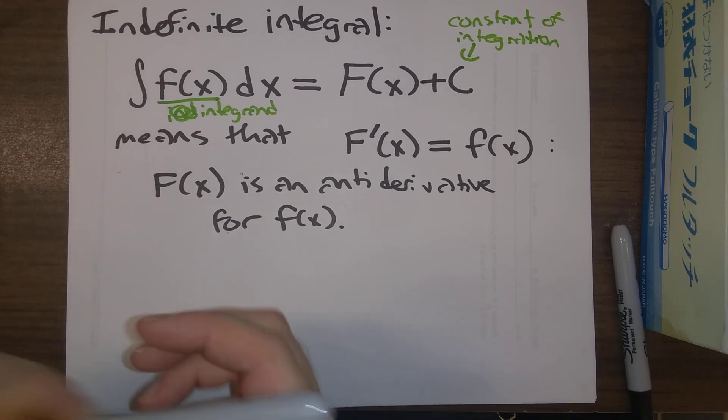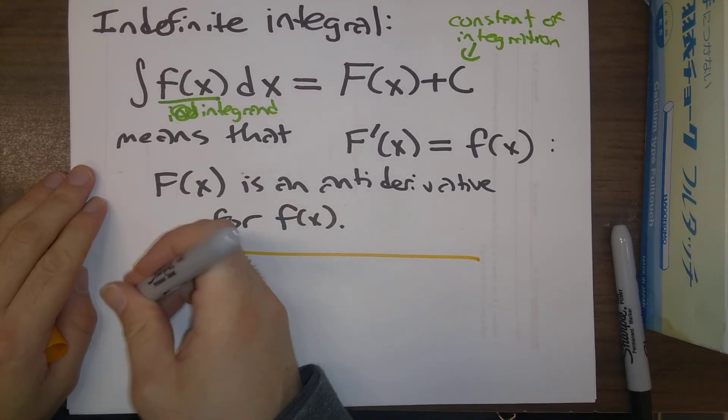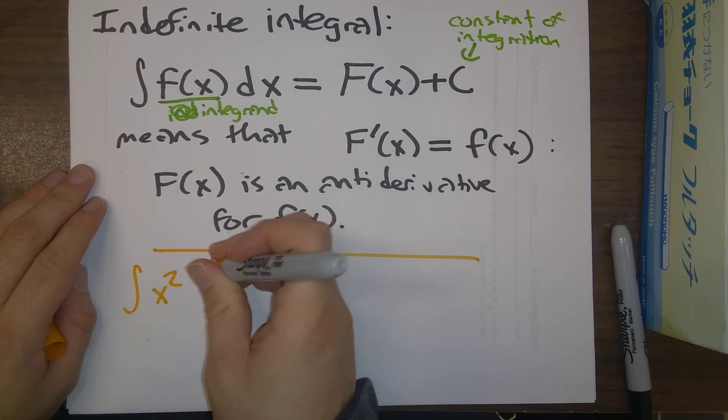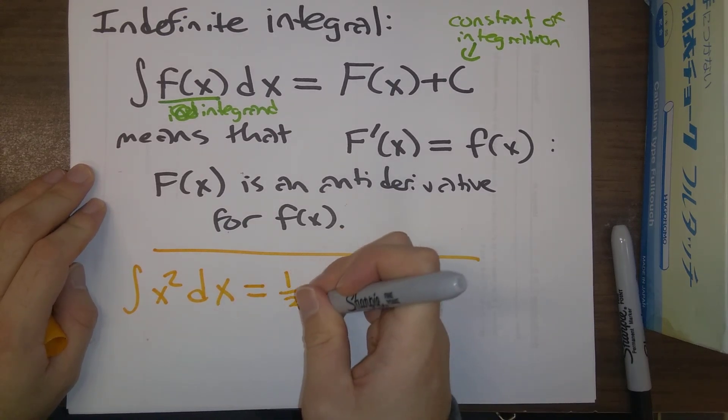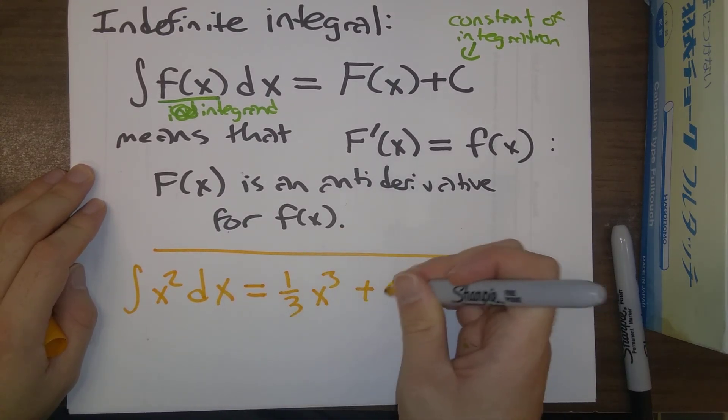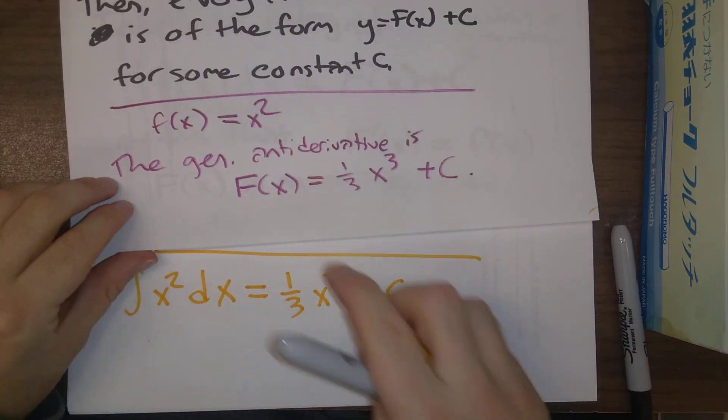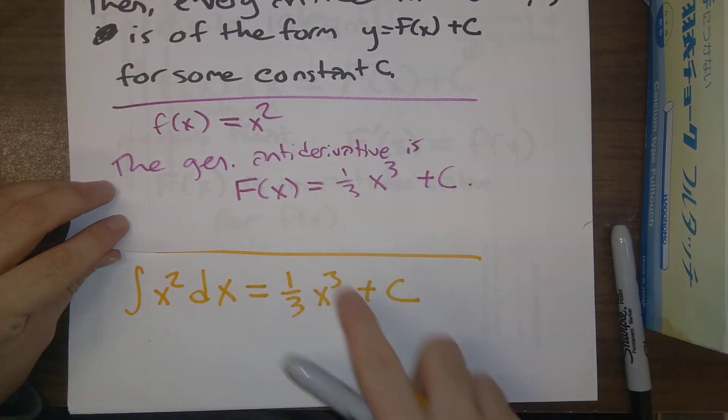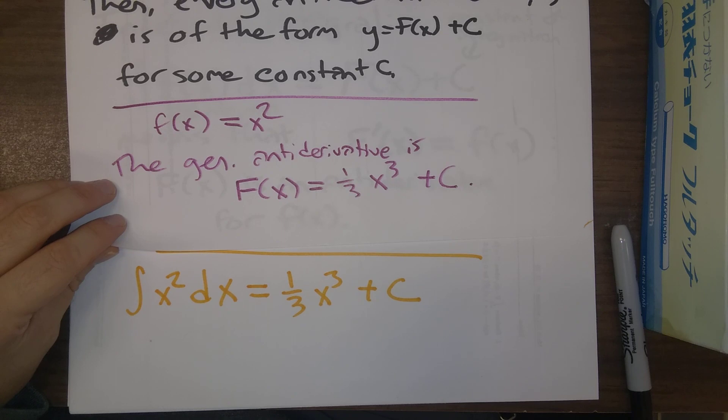Okay, so just to use the stuff that we've done so far. Indefinite integral of x squared dx is 1 third x cubed plus c. So that summarizes what we already talked about before here. Using this indefinite integral notation, we can just write this down.